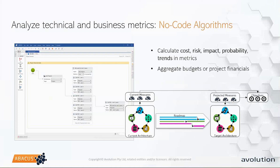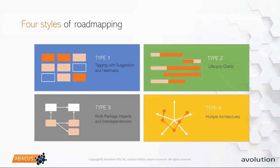These no-code algorithms are all about helping you get from your current state to your future state, using metrics to guide that process along the way — whether it's cost, risk, or whatever metrics people care about. The key point is giving the business and anyone with an opinion the ability to code those algorithms themselves. We in the architecture office don't have to solve every problem — we say: here's a digital repository of your business, how do you want to analyze it? With that, I'll throw over to Andrew to wave the no-code wand over the different ways we can roadmap.